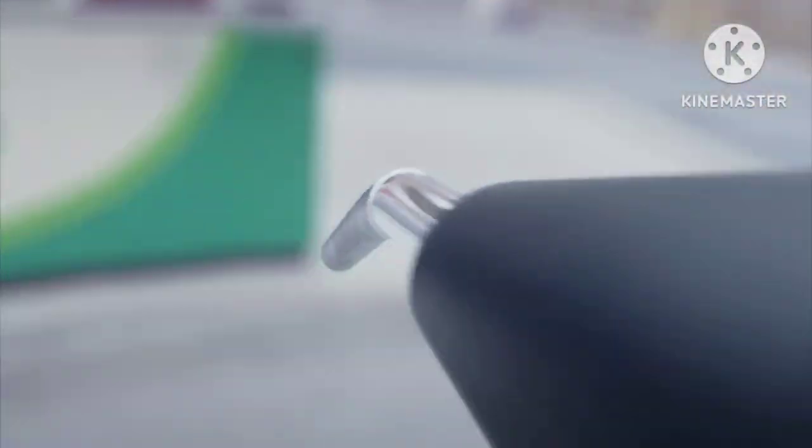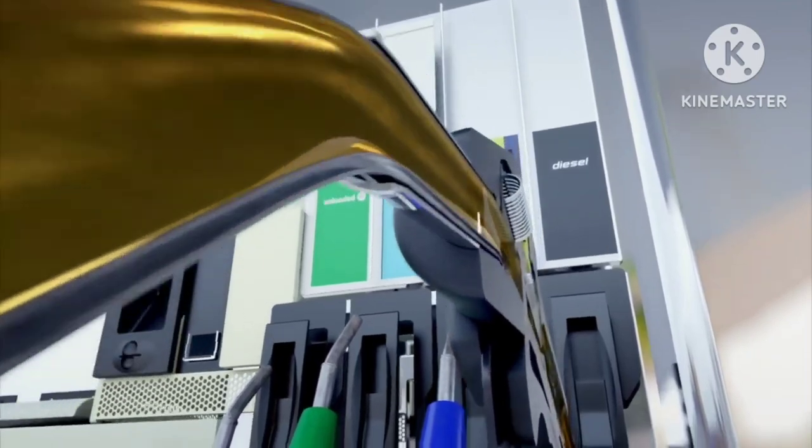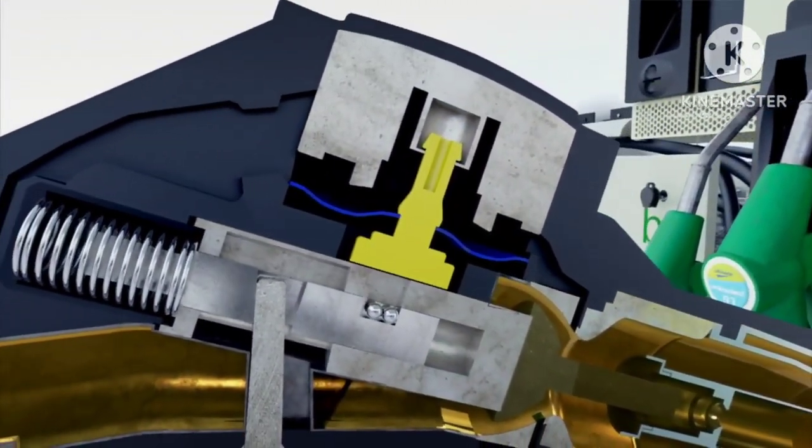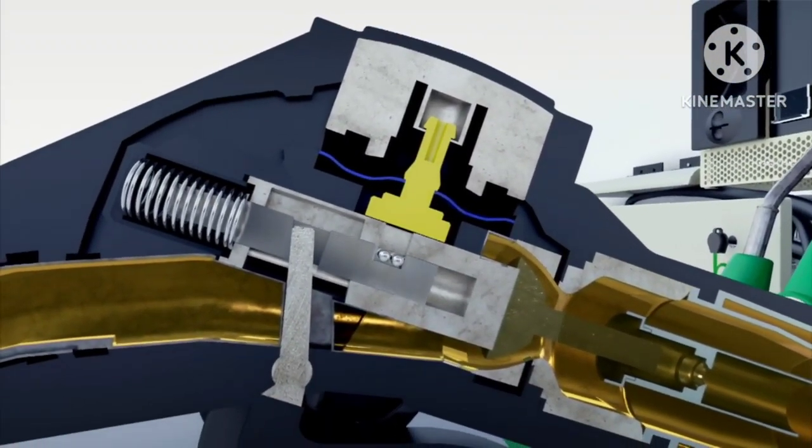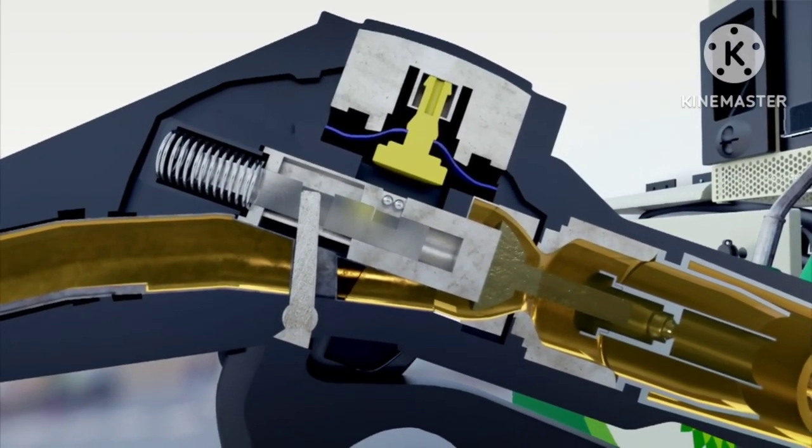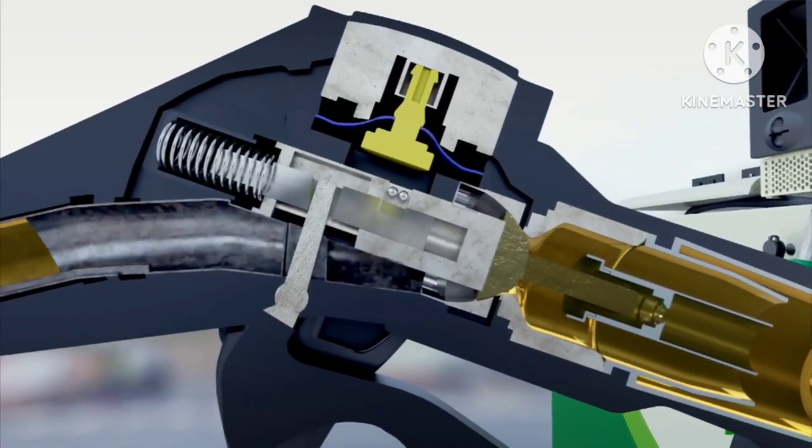The secret lies in the nozzle itself. As gas fills the tank, air is pushed back through a small channel. The air holds a flexible diaphragm in place. When the tank is full, the fuel blocks the air channel and the diaphragm deflates. This releases a spring that forces a valve shut and cuts off the fuel.